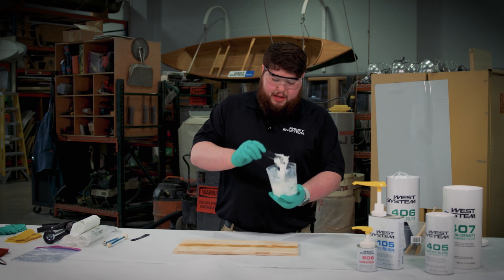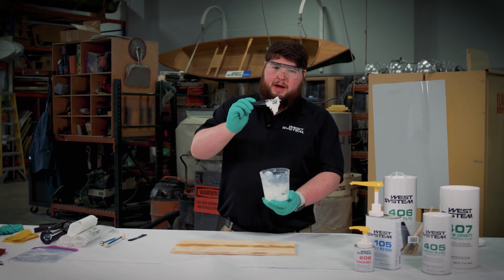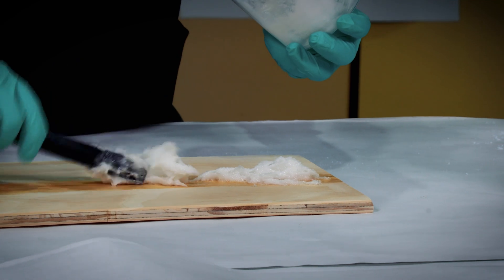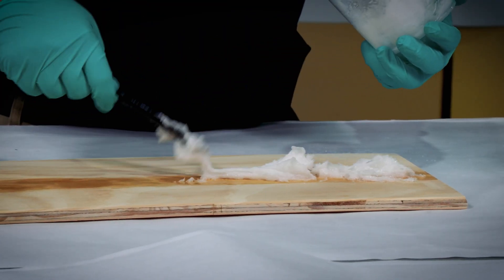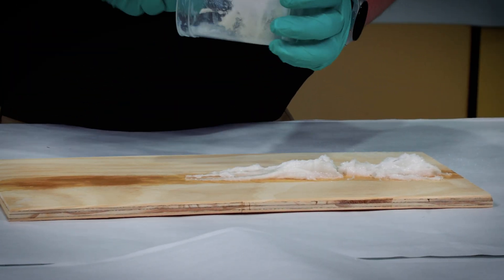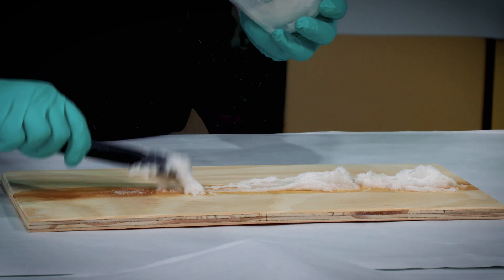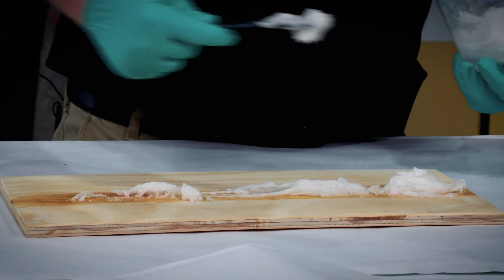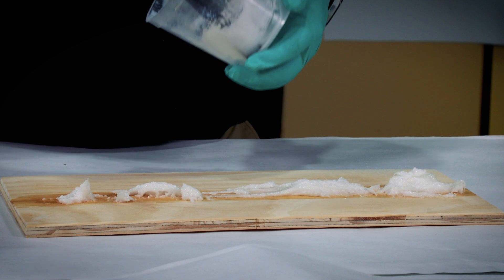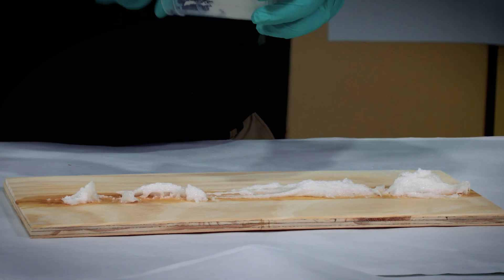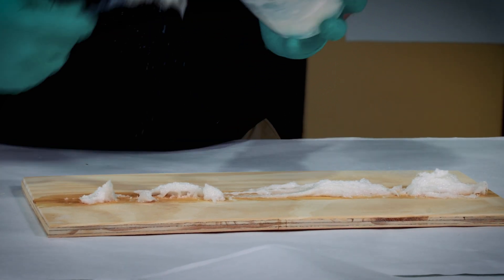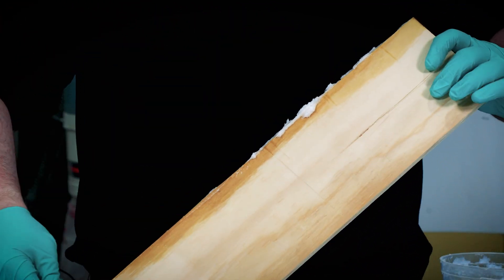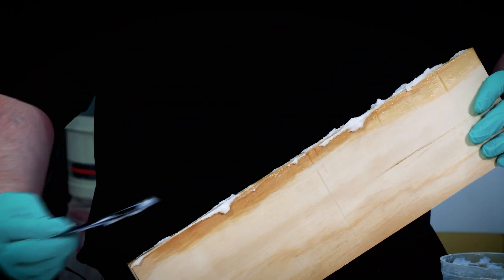Now that I got my epoxy nice and thick, I'm going to lay it down in a bead onto my wood, being very generous with how much I apply because I'm going to shape whatever's left over into a small fillet. I'm going to try to get all of it out and then I will take my other piece that I wet out over here and apply what's left.